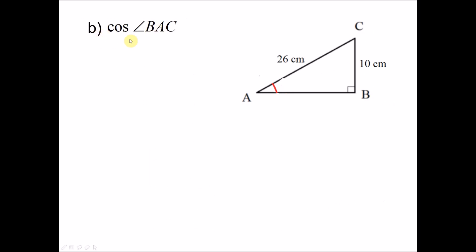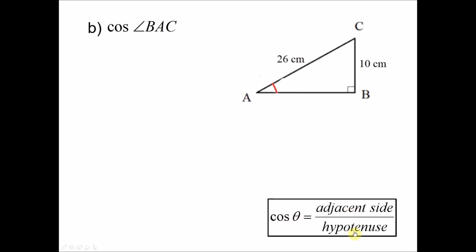Now for question B, we want to find cosine of angle BAC. According to the formula, cosine equals adjacent side over hypotenuse. The adjacent side of this angle is AB, but we don't have the value of AB. So we need to find AB first. Since this is a right angle triangle, we use the Pythagoras theorem.